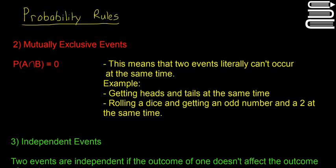An example would be getting heads and tails at the same time, or rolling a dice and getting an odd number and a two at the same time — they just can't happen. The math behind this is just saying that the probability of A intersect B, or A and B, is equal to zero, because they can't occur at the same time.